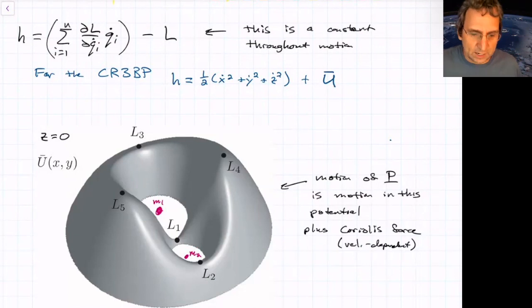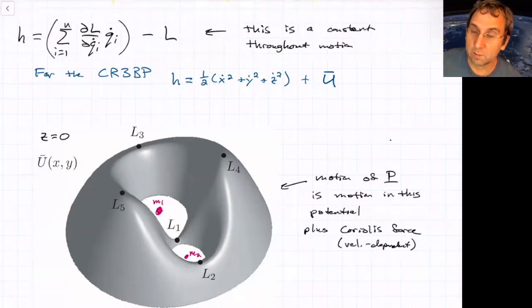So this is where we ended last time. We had derived the equations of motion using the Newtonian approach and then the Lagrangian approach. The nice thing about the Lagrangian approach is that there is a well-known constant motion for all Lagrangian systems, and it's called the Jacobi integral.